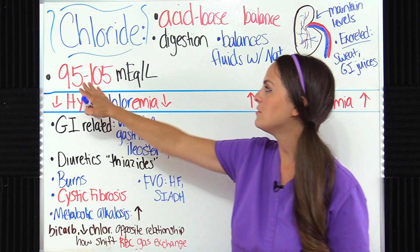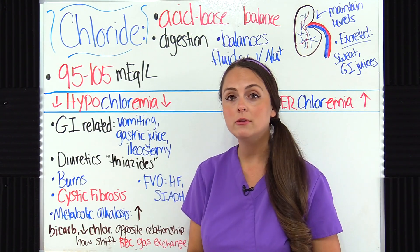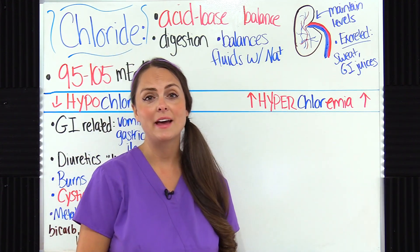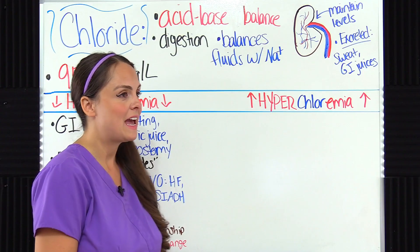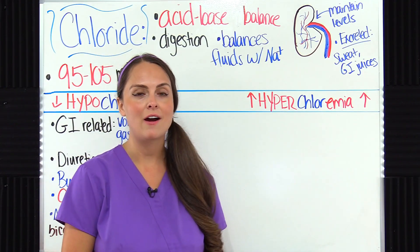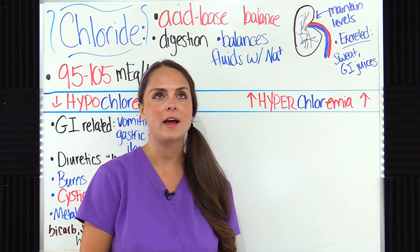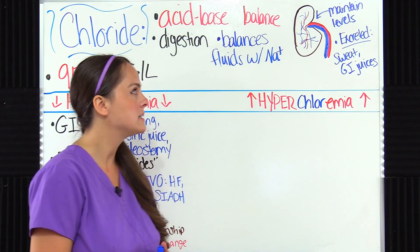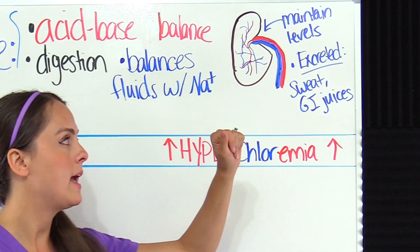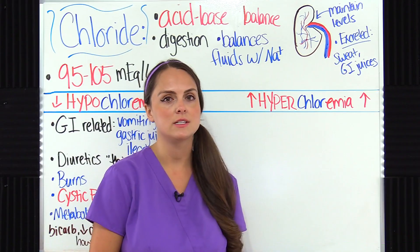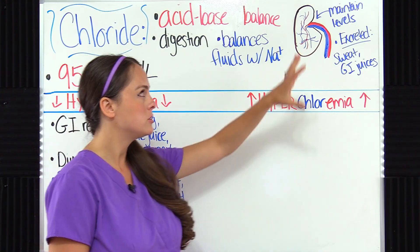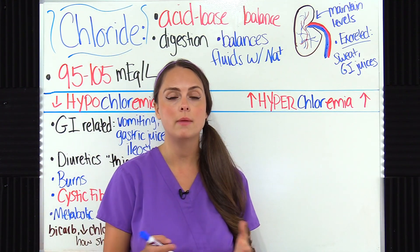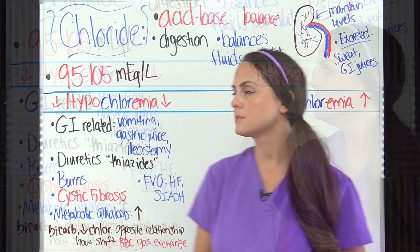A normal chloride level is 95 to 105 milliequivalents per liter. Chloride levels are maintained with the help of our kidneys — they regulate the blood and decide how much chloride is needed. If we don't need a lot, we excrete it. It's also excreted through sweat and GI juices, so if you have an issue with the kidneys, excessive sweating, or GI juices, chances are you can imbalance your chloride levels.